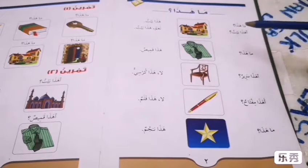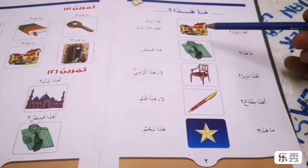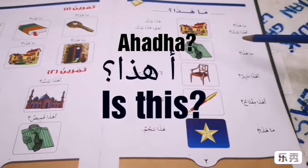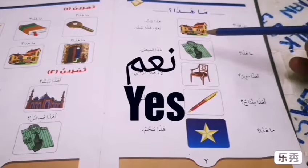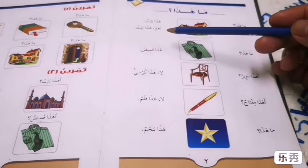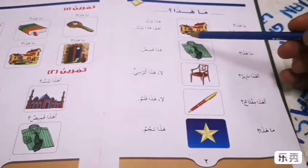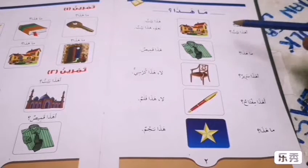You will be going to ask a question. For example: Hada Baitun — this is a house. Hada Baitun. Naam, Hada Baitun — is this a house? Then the answer should be: Naam, Hada Baitun — yes, this is a house.